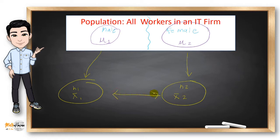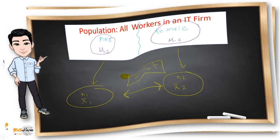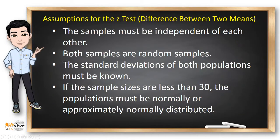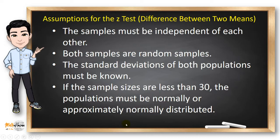When comparing these two means, we can use the Z-Test. But before using the Z-Test, certain assumptions must be met. First, the samples must be independent of each other. Both samples must be random samples and the standard deviations of both populations must be known. If the sample sizes are less than 30, the populations must be normally or approximately normally distributed.